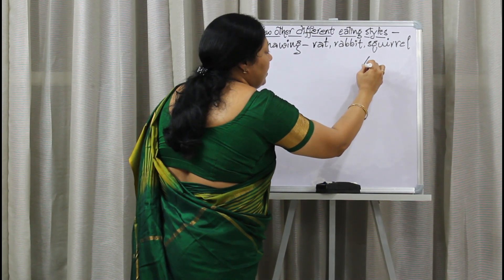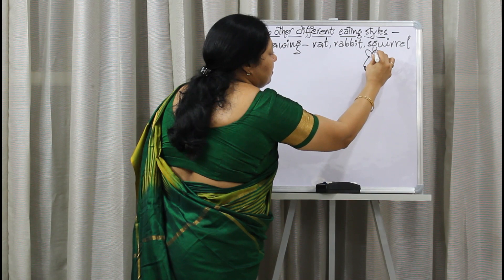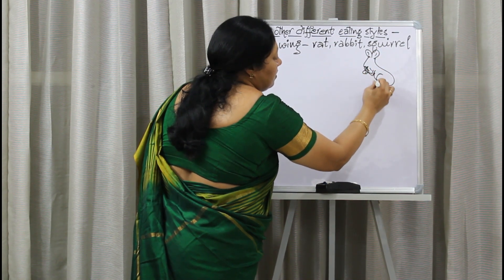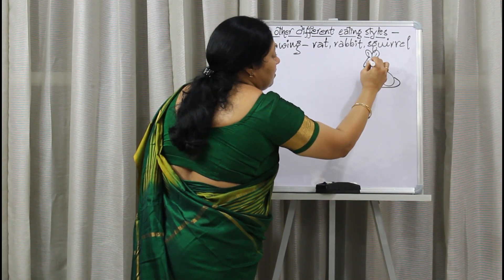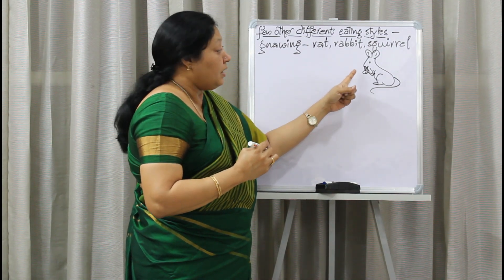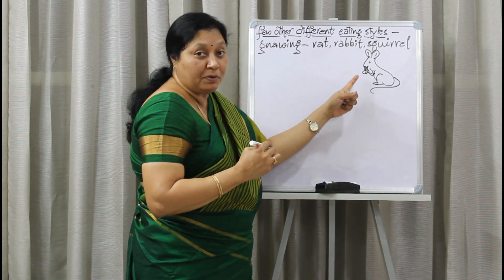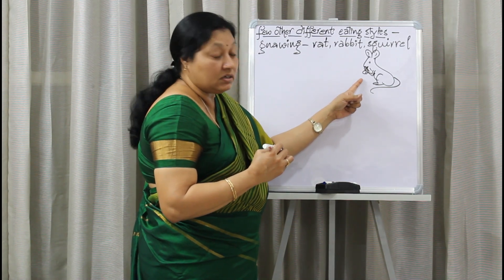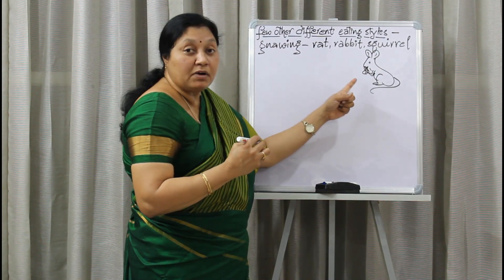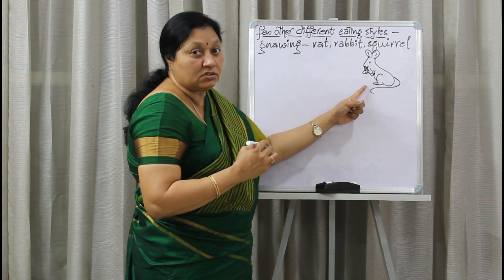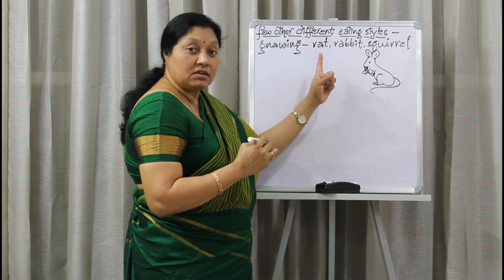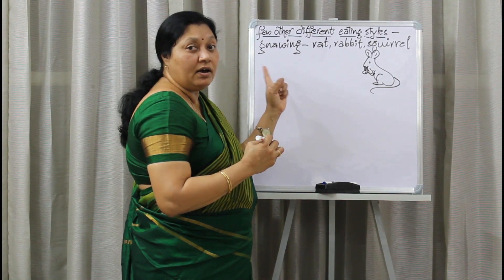Gnawing animals have very sharp front teeth, where they bite and make their food into very small pieces before swallowing it. This type of eating is called gnawing, and these animals are referred to as gnawing animals. Rat, rabbit, and squirrel are a few examples.